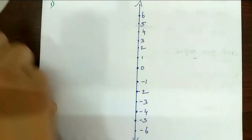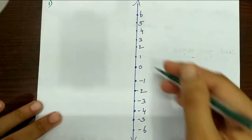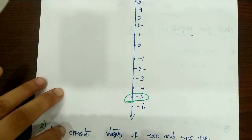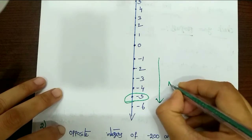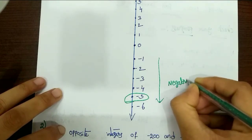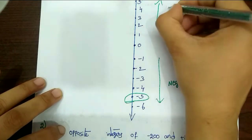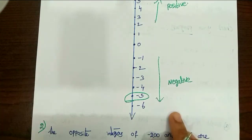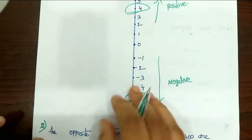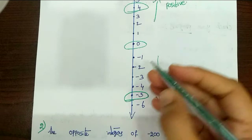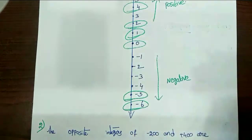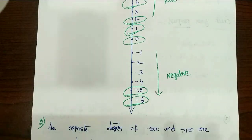On the vertical number line, values above 0 are positive and below 0 are negative. So we mark minus 5 below 0 on the negative side, plus 4 above 0 on the positive side, 0 at the center, minus 6 further below, then 2 above, and finally 1 — each marked with a point on the line.